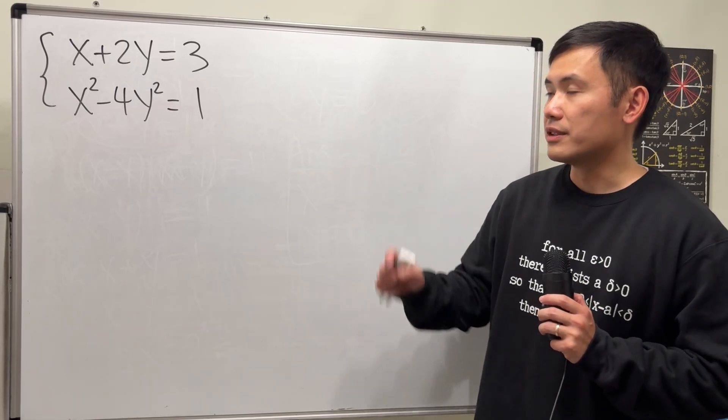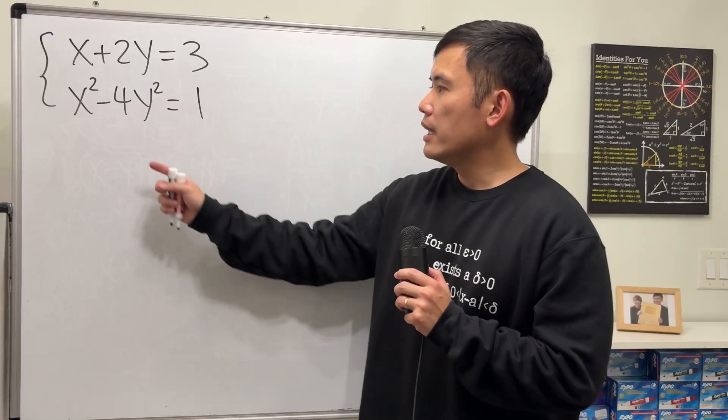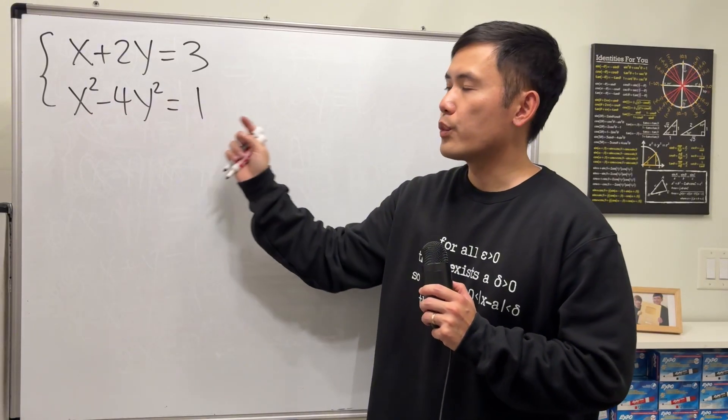I wanted to show you guys how to solve this kind of system of equations. Here we have x plus 2y equals 3, and the second equation is x squared minus 4y squared equals 1.